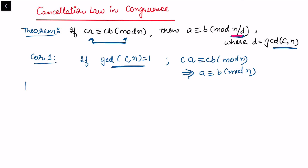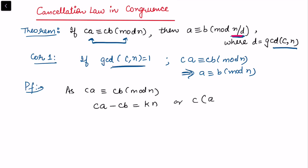Now let me prove the general theorem, from which the corollary follows directly. Given the condition ca is congruent to cb modulo n, this means we can write ca minus cb equals k times n for some integer k. Taking c common, c(a minus b) equals k times n. Since we want to involve the gcd, let d be the gcd of c and n.